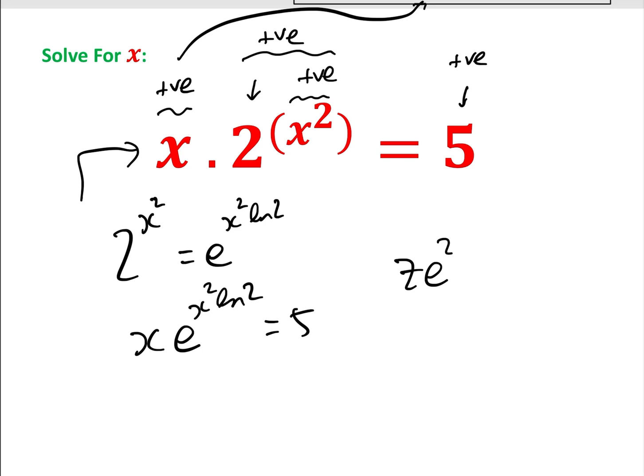We need to get it into the form z·e^z = c. If this doesn't mean much to you, please watch the video 'The Simple Guide to the Lambert W Function Graph'—the link is in the description. This is the form we need to get it into.